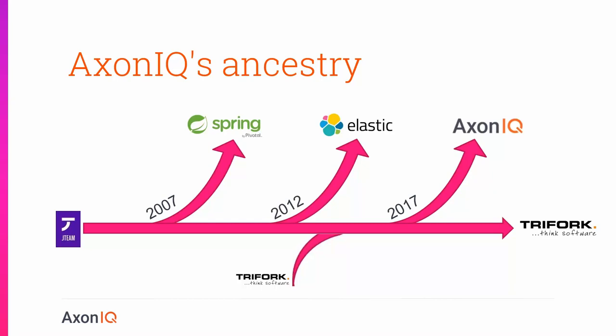Axonic wasn't the first company to spring out of Trifork and its predecessor. Another one you may have heard of is Elastic, which split out of Trifork in 2012. And an even older one is Spring, which was later acquired by Pivotal — very successful, now pretty famous companies in the Java world. We hope and expect that Axonic will be in a similar position a couple of years from now.